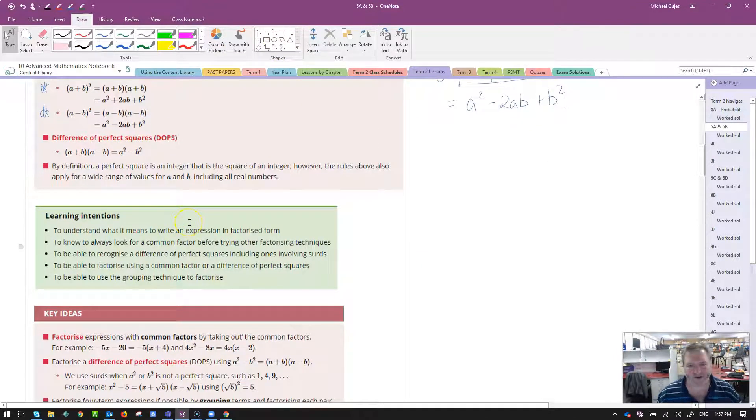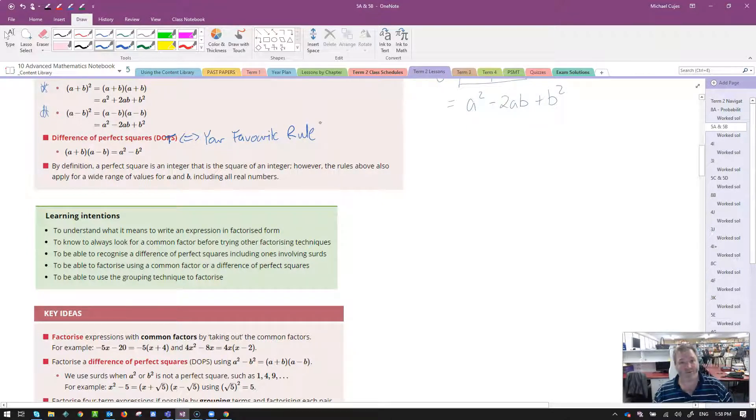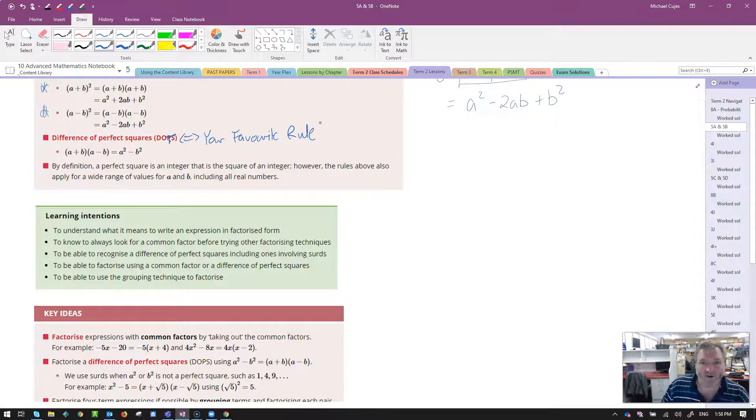Difference of perfect squares. Why are they calling it DOTS when it could be any two squares? I'd always change that to DOTS for two squares, or I'd just say your favorite rule in maths, because that's what it is. It's going to save you more time than any other rule in maths while you're at school.